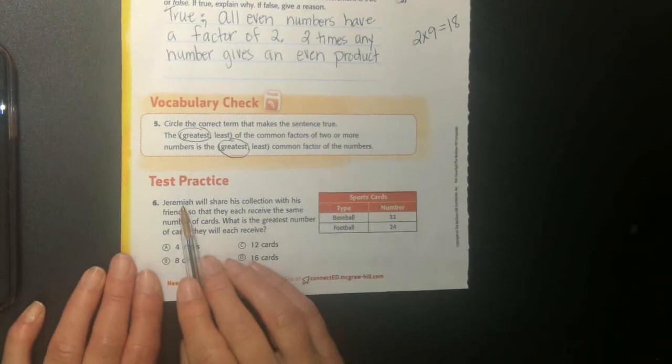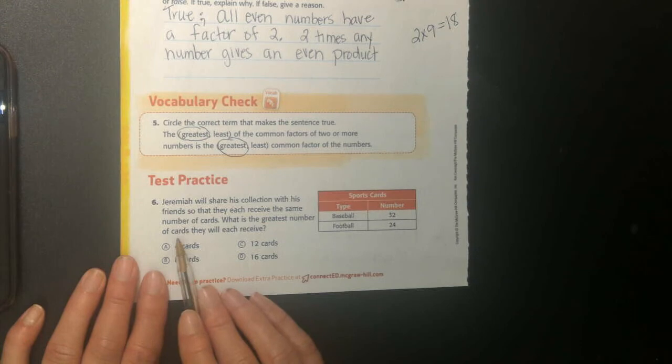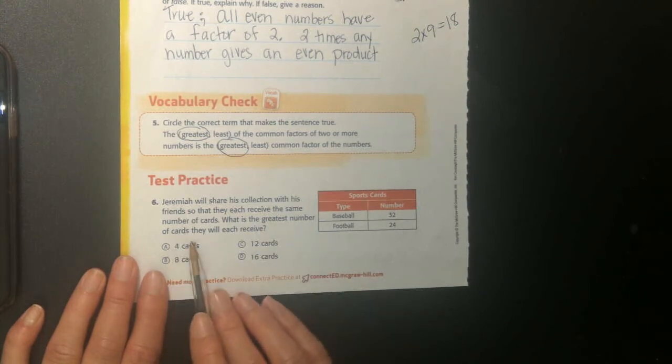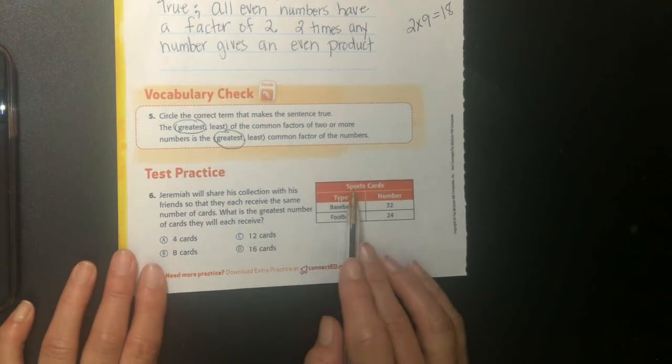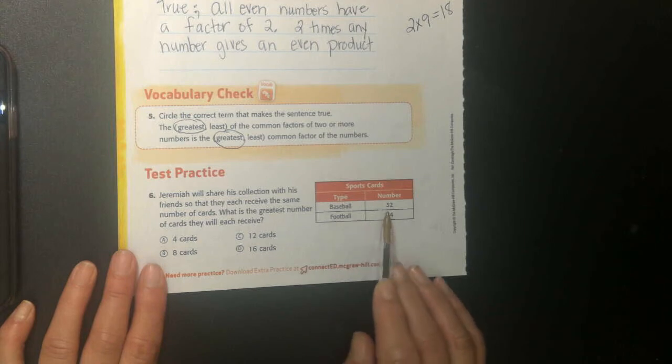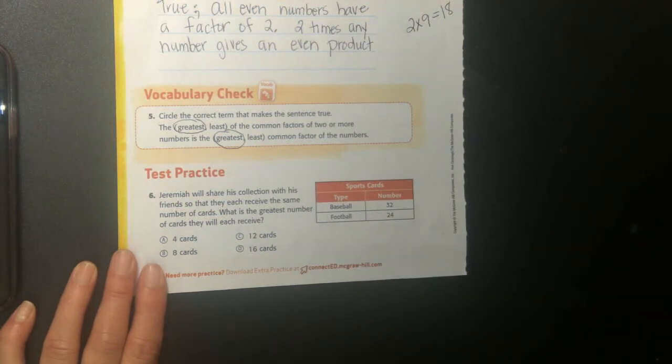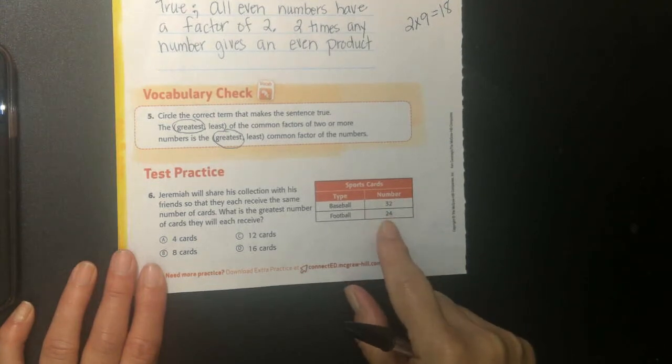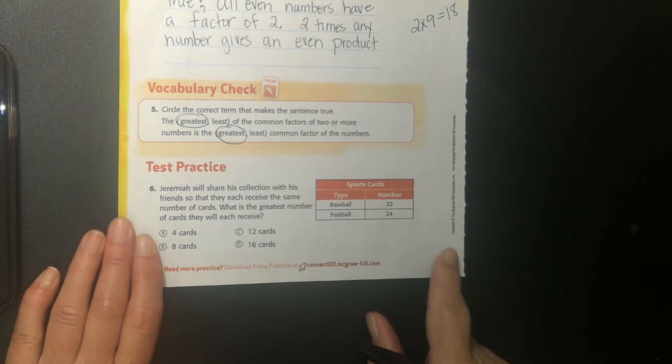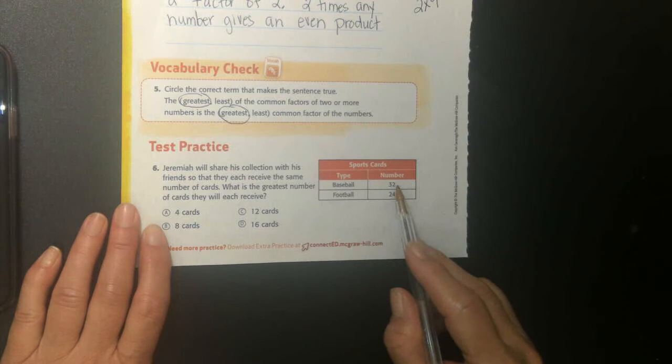Jeremiah will share his collection with his friends so that they each receive the same number of cards. What is the greatest number of cards they will receive? So, he's going to share his cards. He has a card collection, sports cards. He has baseball and football cards. He has 32 baseball and 24 football cards. He's going to share his collection with his friends so they all have the same number of cards. He can't give them the same number because he has more baseball than football. He's going to share them up among his friends.